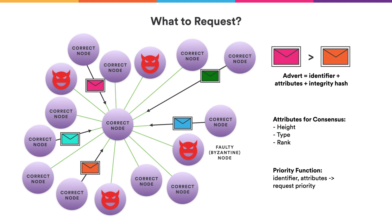The next question is which adverts should be requested first. For that, gossip relies on a priority function. Each advert contains some attributes — for example, those visible for consensus adverts. Peer-to-peer expects consensus to provide a priority function that decides which artifacts to request next. For example, if consensus is at height 10 now, it may prefer artifacts for that height over those for height 11 or 12, depending on type and other state parameters. Peer-to-peer does not make the decision — the clients do, based on the attributes visible on the adverts. The priority can be: I don't care about this artifact at all; fetch it sometime; or fetch it immediately. In the future, more granular priority values could be added if needed.